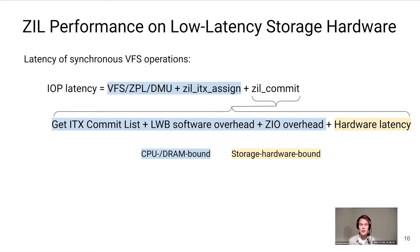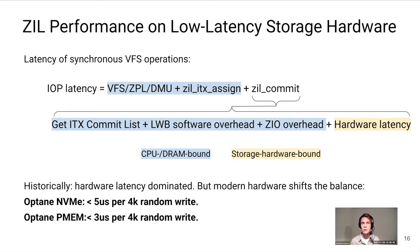Historically, software overhead wasn't really a problem because hardware latency dominated. But with modern hardware — for example, the 3D XPoint technology used in Optane NVMe and PMEM drives — we get single-digit microsecond latencies for 4K synchronous random writes. This means that even a few microseconds of processing time can easily become the bottleneck for ZIL performance.